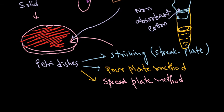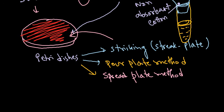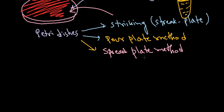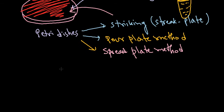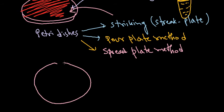The pour plate method is different — it should not use an already solidified medium. If you have a completely solidified medium, you can go for streak plate or spread plate method. For the spread plate method, you take the agar plate, take the inoculum, and place it as drops onto the agar surface.